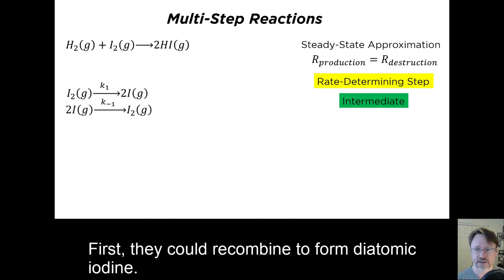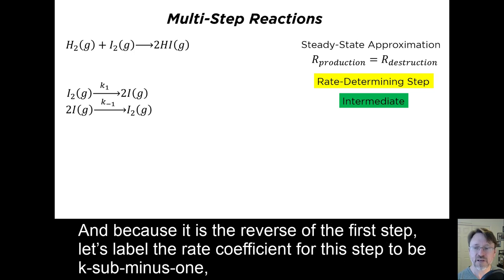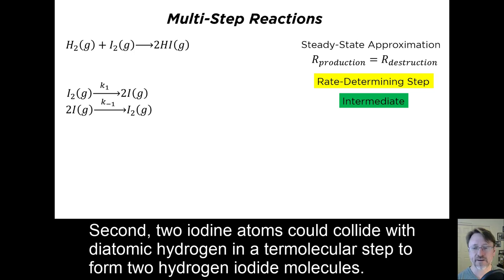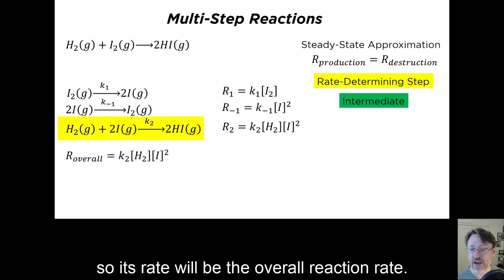First, they could recombine to form diatomic iodine. Notice that this is the reverse of the first step, so we need to think of this as a dynamic equilibrium. And because it is the reverse of the first step, let's label the rate coefficient for this step k sub minus 1, indicating that it is the reverse of step 1. Second, two iodine atoms could collide with the diatomic hydrogen in a termolecular step to form two hydrogen iodide molecules. Let's write down the individual step rates, and notice that R2 is the step that produces the products, so its rate will be the overall reaction rate.